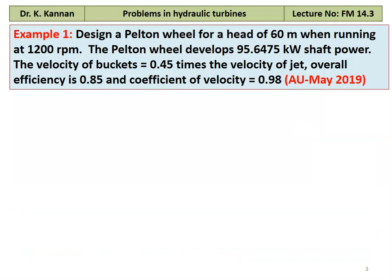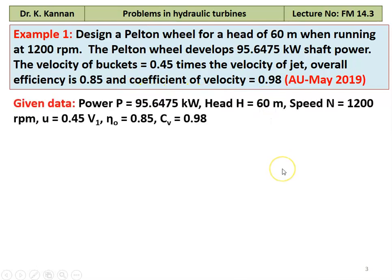Example number 1 from May 2019 question paper: Design a Pelton wheel for a head of 60 meters when running at 1200 RPM. The Pelton wheel develops 95.6475 kW shaft power. The velocity of the bucket is 0.45 times the velocity of the jet. Overall efficiency is 0.85 and coefficient of velocity Cv is 0.98.